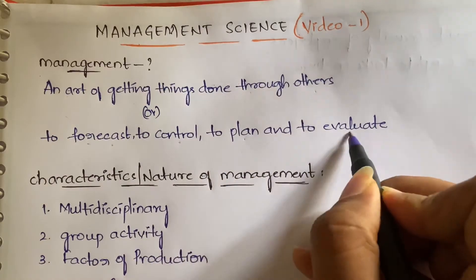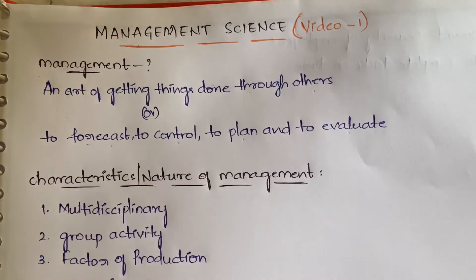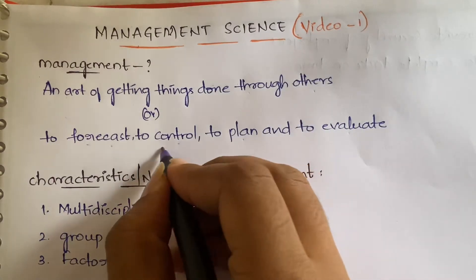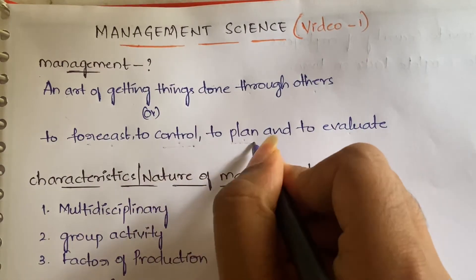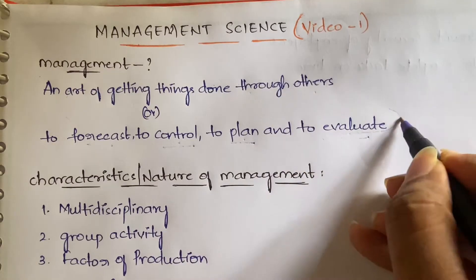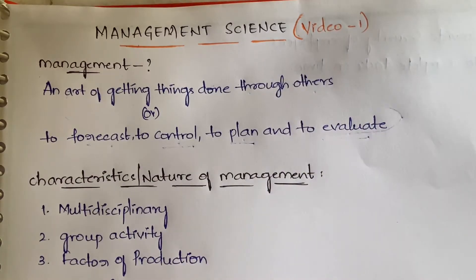Management can also be defined as to forecast, to control, to plan, and to evaluate. Forecasting means predicting what may happen in the future, like weather forecasting. To control and plan things, and to evaluate means performing analysis or reviewing results. That is the formal definition of the word management.